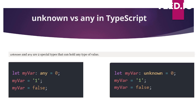unknown and any are two special types — these types can hold any type of value. In this example, I have a variable of type any. I have assigned a number to it, then a string, then a boolean. Similarly, I've done the same with unknown. So these two special types can hold any type of value.